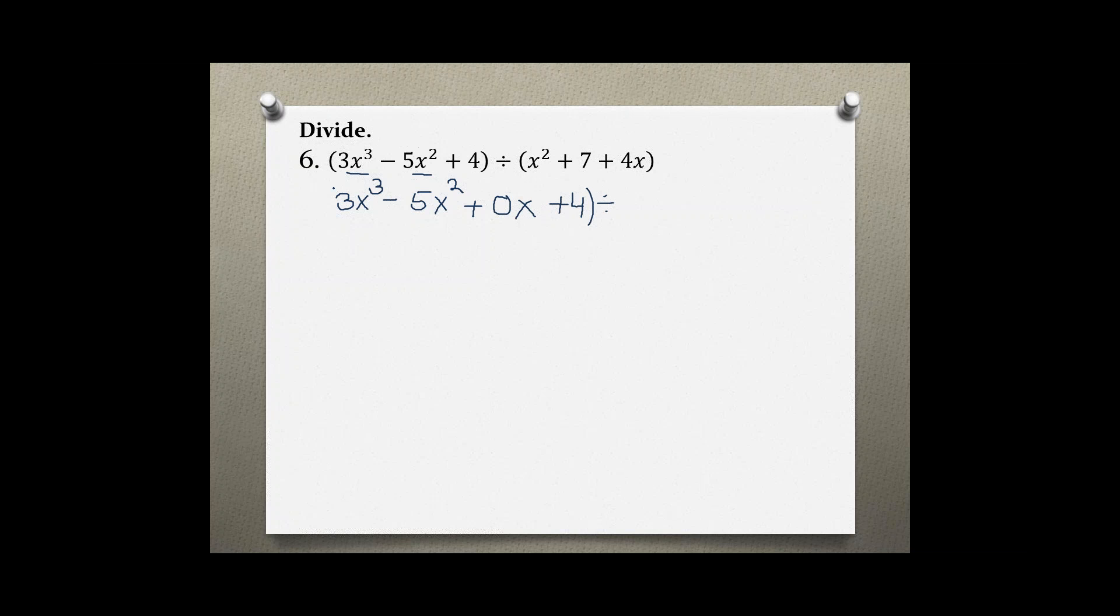And for the second one, we do have all the terms, but they are not in descending order. So, starting with the highest exponent, which is x squared, and then going down 4x, and last, plus 7.